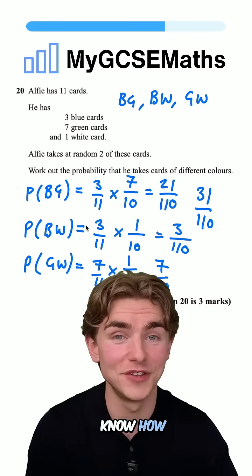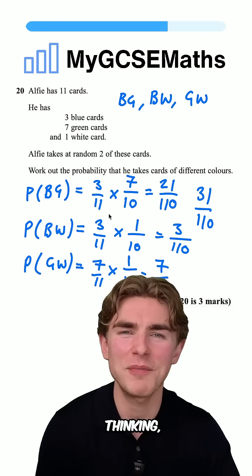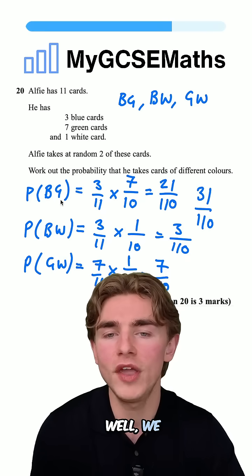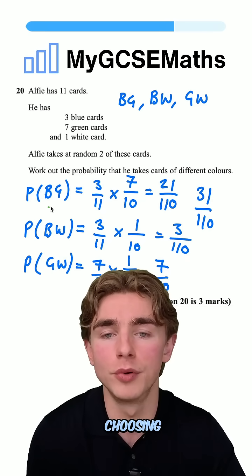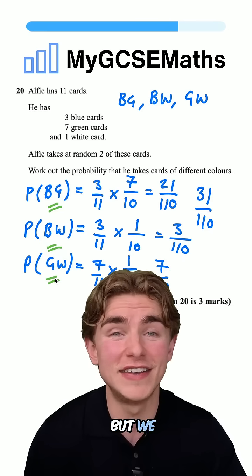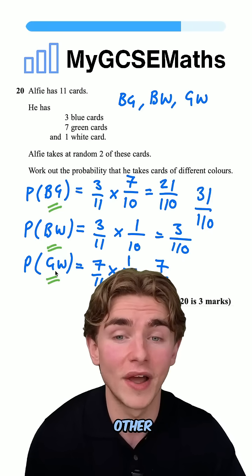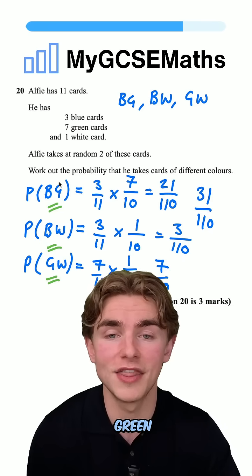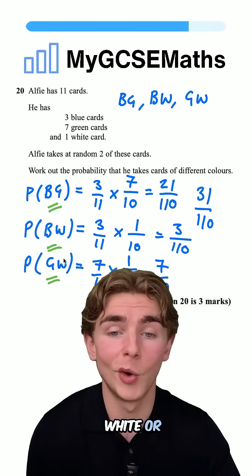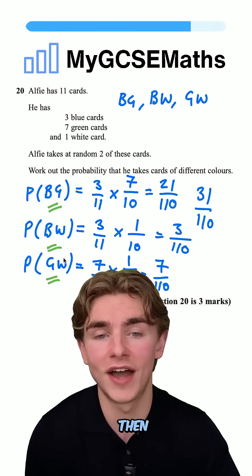Those of you who know how to do this are thinking, we're not finished. And you're right. We're actually not finished. Why? We worked out the probabilities of choosing blue then green, blue then white, or green then white. But we didn't account for the fact that there are other ways. We could have gone green then blue instead of blue then green, white then blue instead of blue then white, or white then green instead of green then white.